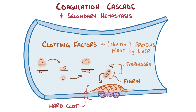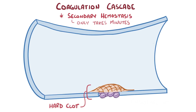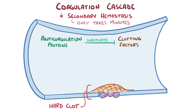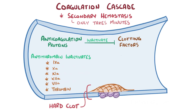This cascade has a huge degree of amplification and takes only a few minutes from injury to clot formation. The activation of the cascade is carefully controlled by anticoagulation proteins that target and inactivate key clotting factors. For example, antithrombin inactivates factors 9a, 10a, 11a, 12a, 7a, and thrombin, while protein C inactivates factors 5a and 8a.